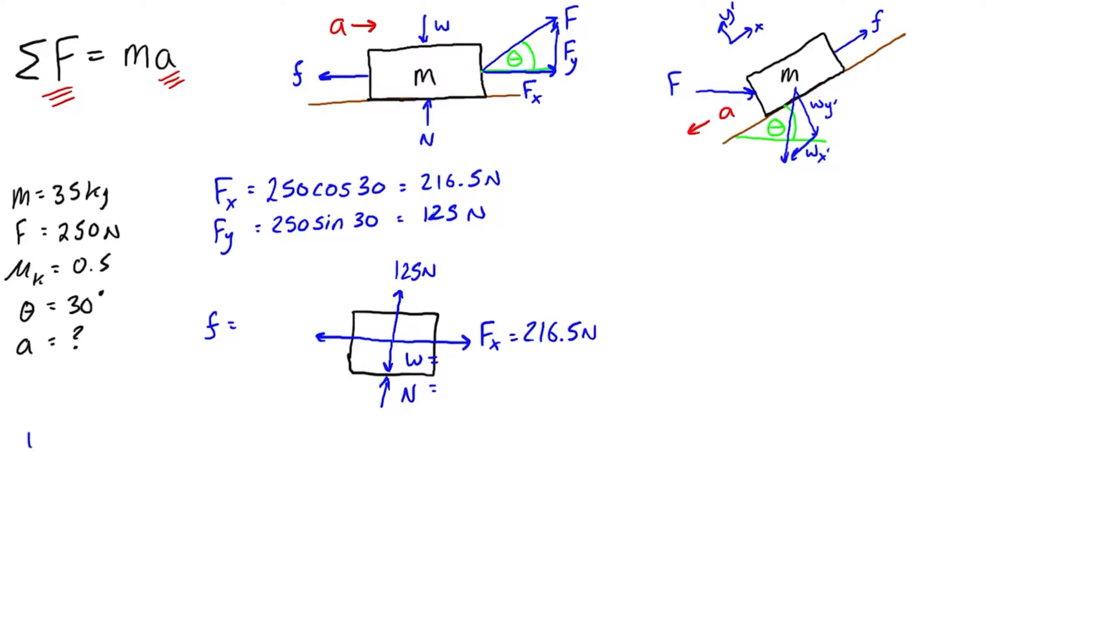So for w, that's just equal to mg, which is equal to 35 kilograms times 9.81 meters per second squared, which gives us 343.35 newtons. We can label that on.